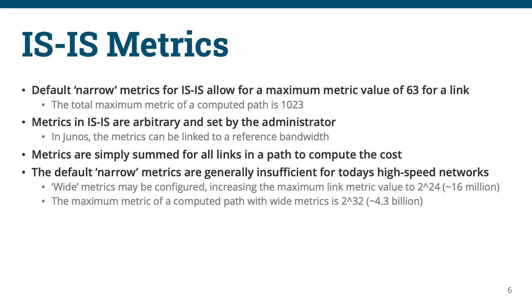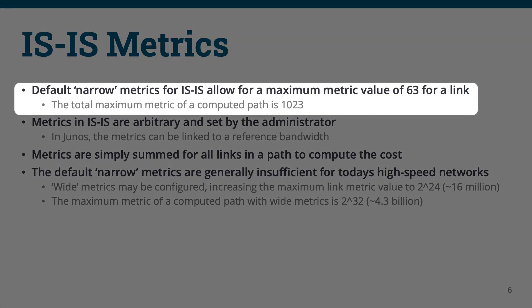When ISIS was first developed, the cost, or metric, of an individual link could be a value from 0 to 63, making 64 possible values. The maximum cost of a total computed path was 16 times this value, giving a range of 0 to 1,023, or 1,024 possible values.